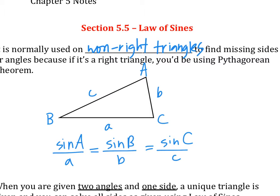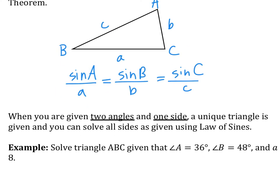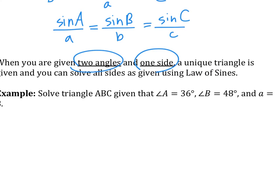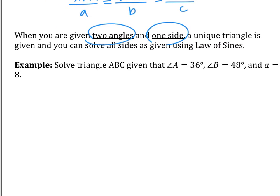Basically, it's saying that that proportion is always consistent within the triangle. We're going to do the easy case today, and tomorrow we'll do the hard case, so tonight's homework will be a breeze. When you're given two angles and one side, that means only one triangle is possible to be formed, and we can figure out everything using the Law of Sines.